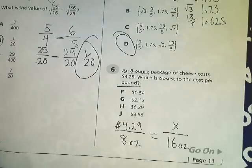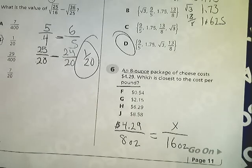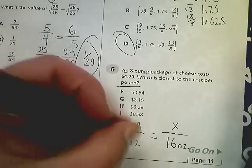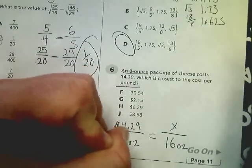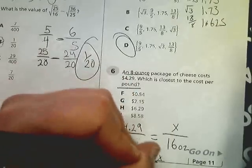Then I'm going to cross multiply. So I do 16 times 4.29 equals 68.64, and that's equal to 8 times x, and I just divide by 8.